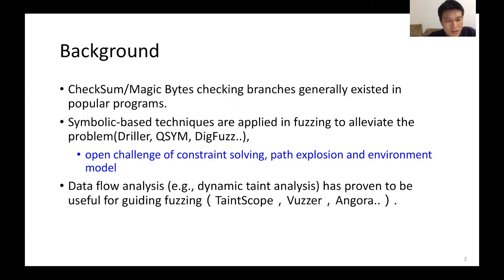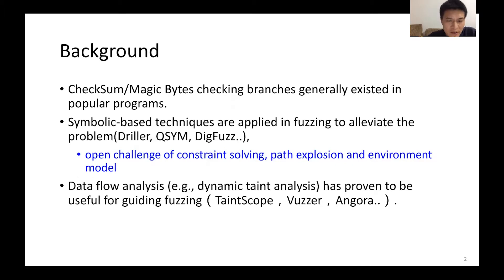Symbolic execution and dynamic taint analysis are introduced to assist fuzzing in solving these hard constraints, and there has been lots of representative work in the past few years. But both of these methods are facing many open problems. Symbolic-based techniques are always limited by constraint solving, path exploration, and the environment model.